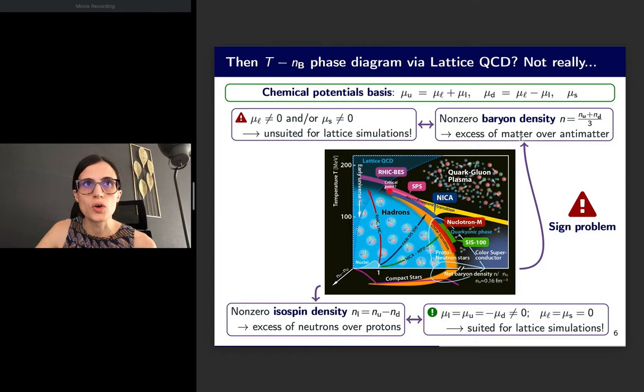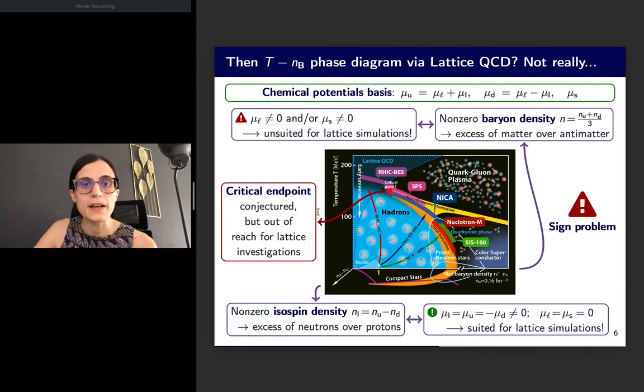Combining lattice simulations and techniques we will learn about in the second part of this class, like Taylor expansion or reweighting techniques, we can use a lattice approach with standard Monte Carlo sampling to investigate and find results in a small portion of the non-zero baryon density phase diagram, which is highlighted in the sketch. But important features like the existence of this critical endpoint that is conjectured are out of reach of lattice investigations at the moment and cannot be confirmed.